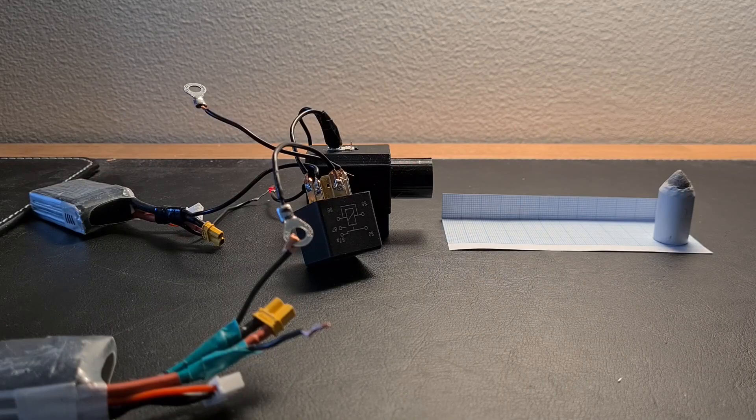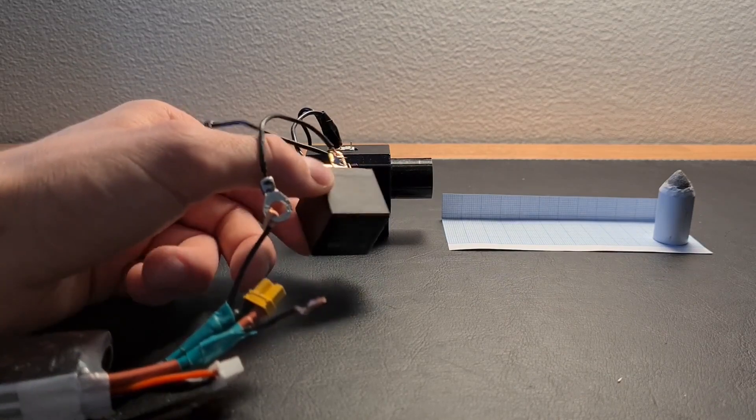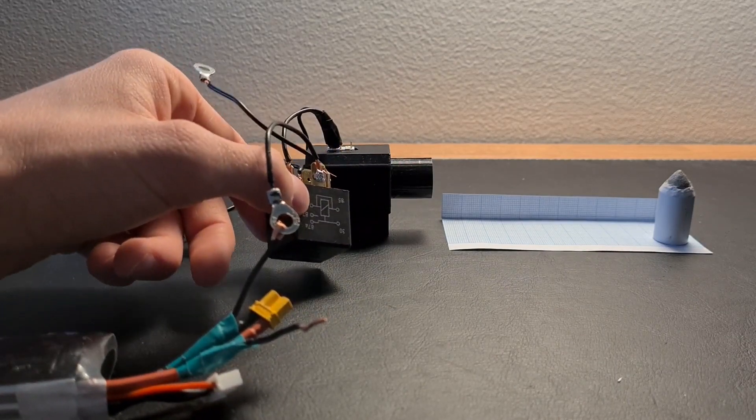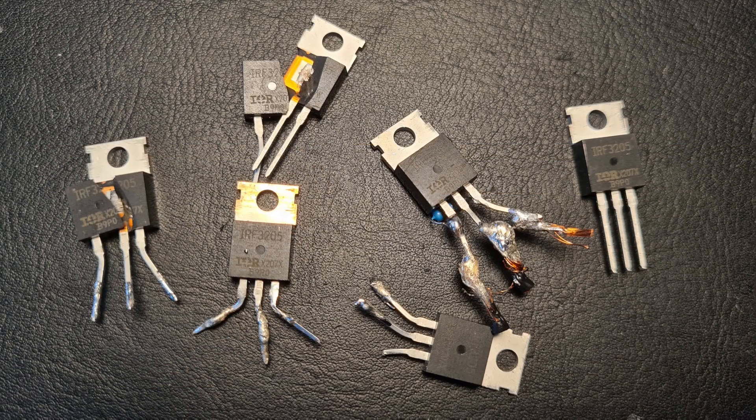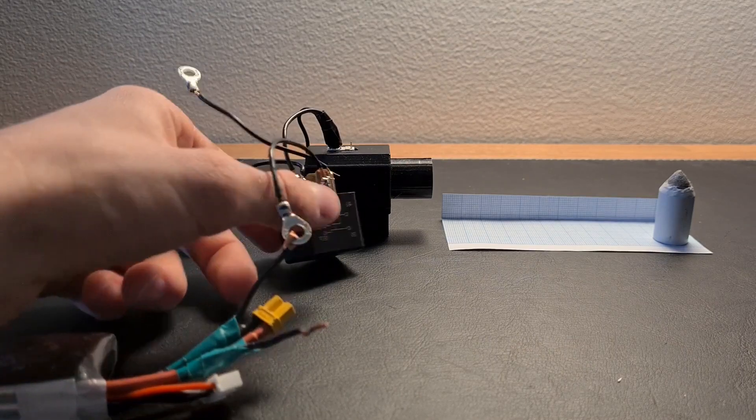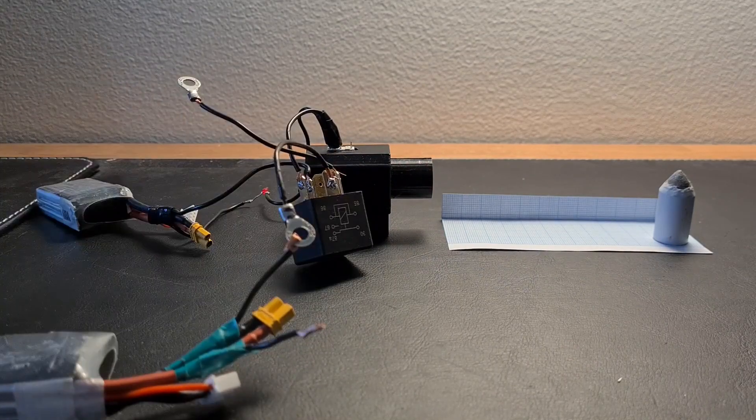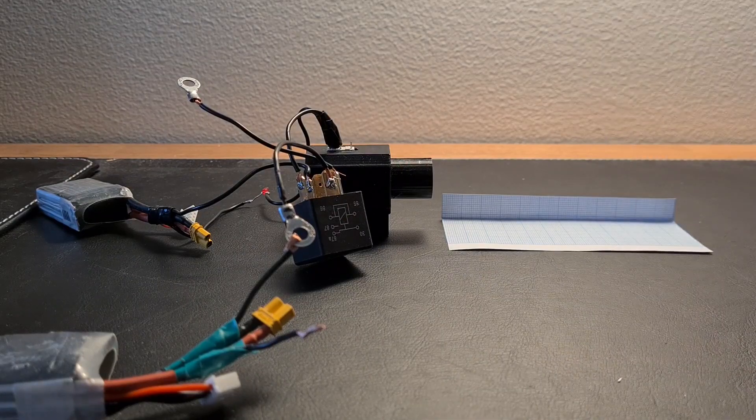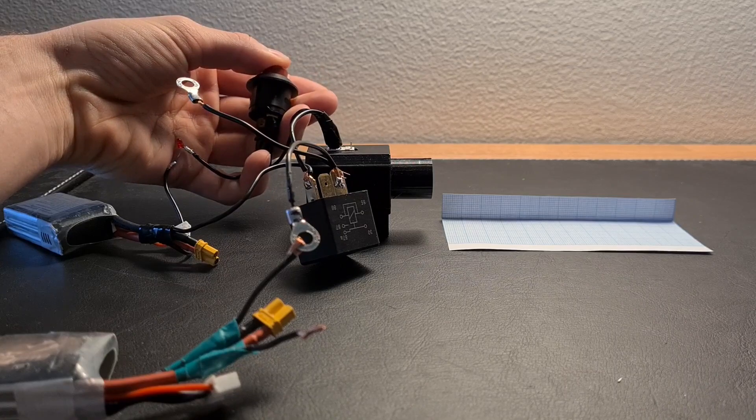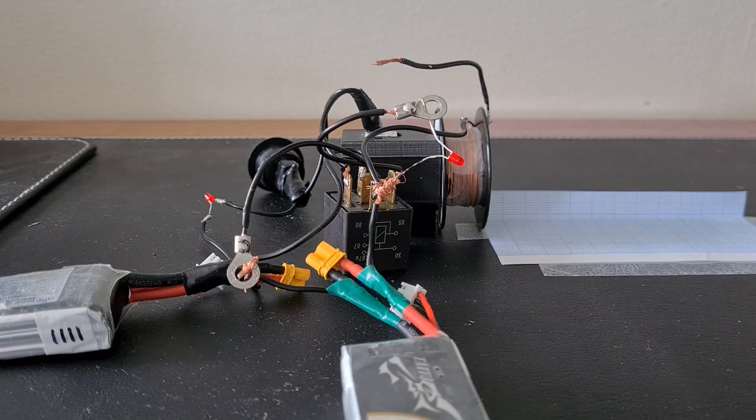So before we start, I want to note some changes that I made to the setup. Instead of using a MOSFET, I'm now using this relay to switch the power to the coils. Because the MOSFET kept breaking due to what I suspect is back EMF from the coil when the microswitch deactivated. So I'm using this relay, which has a mechanical switch in it instead. It still works the same. When I load the projectile and press the button, the LED lights up and it switches the power.